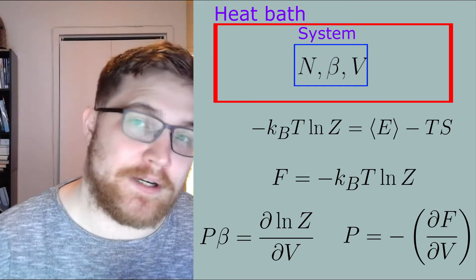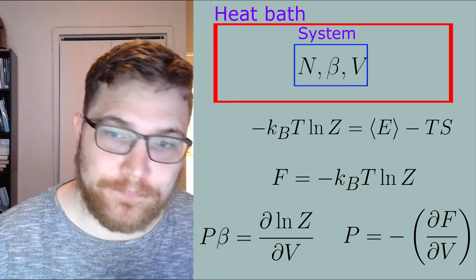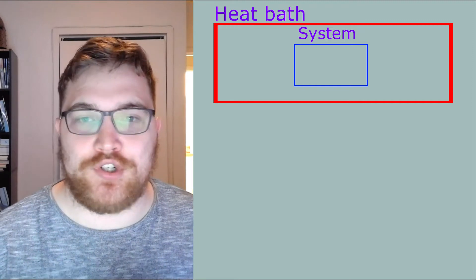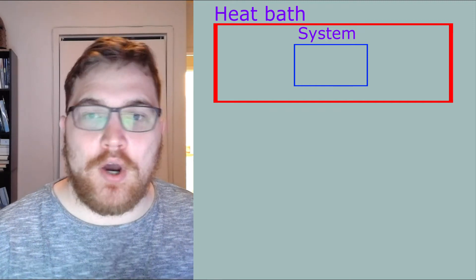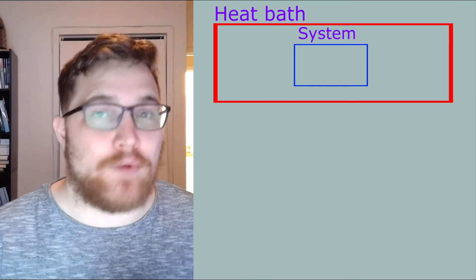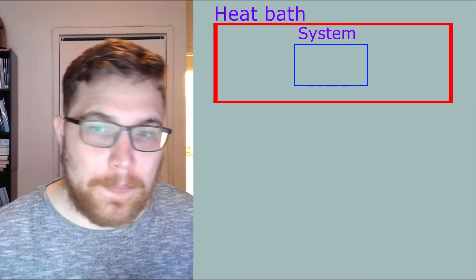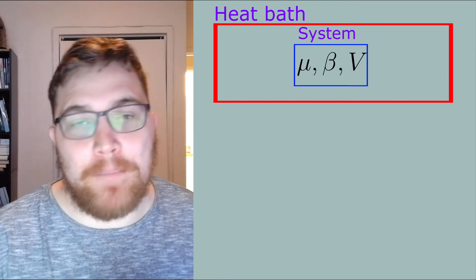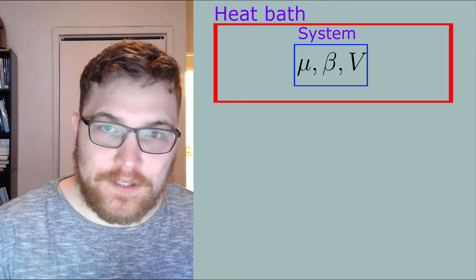The next scenario is really similar. What if instead of only being able to exchange energy with the heat bath, what if we could also exchange particles? This leads us to the grand canonical ensemble. Our new thermodynamic variables then are mu for the chemical potential, beta, and V.